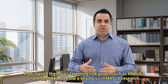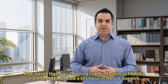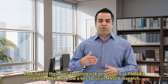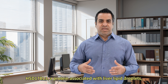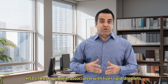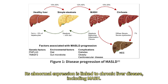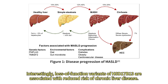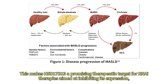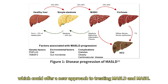RNA-based therapies targeting risk genes such as PNPLA3 and HSD17b13 are now a key focus in MASLD research. HSD17b13, a protein associated with liver lipid droplets, plays a crucial role in the development of hepatic lipid droplets. Its abnormal expression is linked to chronic liver disease, including MASH. Interestingly, loss-of-function variants of HSD17b13 are associated with reduced risk of chronic liver disease, making it a promising therapeutic target for RNAi therapies aimed at inhibiting its expression, which could offer a new approach to treating MASLD and MASH.